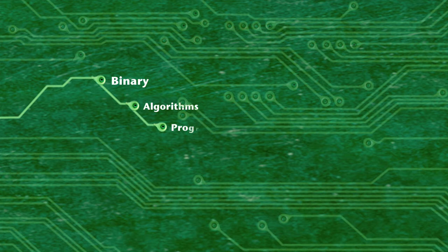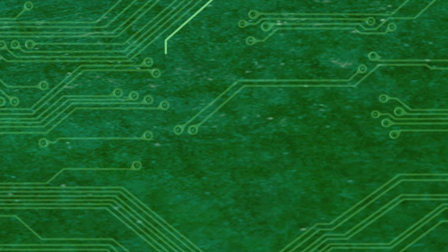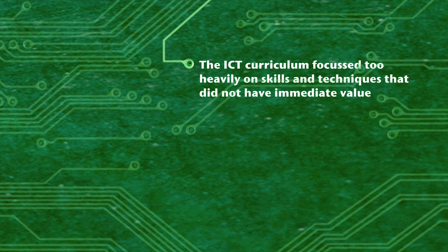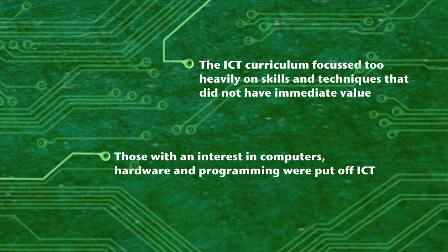In 2008, a group of professionals got together to discuss what was going wrong in ICT teaching. The teachers among the group voiced the concern that the computational thinking activities that students were doing many years previously were no longer being taught. This was binary, algorithms, programming, precision and logic. It was concluded that the school ICT curriculum focused too heavily on skills and techniques that did not have immediate value to the pupils, and this was what made ICT so unpopular. Also, those with an interest in computers, hardware and programming were put off ICT.